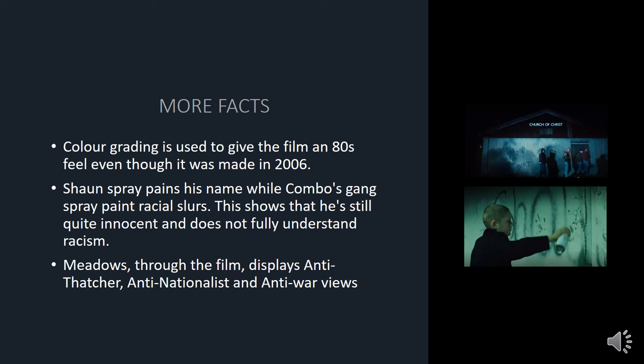Colour grading is used to give the film an 80s feel even though it was made in 2006. The image outside the Church of Christ shows a very blue and cold colour grade where 'Maggie is a twat' appears about four times on screen. When Sean is being radicalised and we see the second montage of him in the tunnel spray-painting his name, we get a green tinge. So colour grading is used overall, but in certain moments it also communicates a feeling and additional meaning.